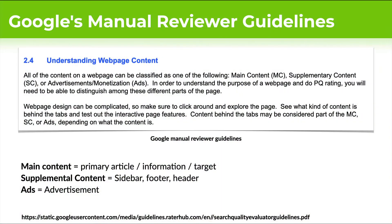We're going to be talking about the main content. According to Google's manual reviewer guidelines, they break down the page into different sections — main content, supplementary content, and advertisement. Those are the three sections they want manual reviewers to identify in order to understand the purpose of the webpage. Google breaks things down slightly differently, a bit more granular, but this gives us a really good idea of what we need to pay attention to as SEOs.